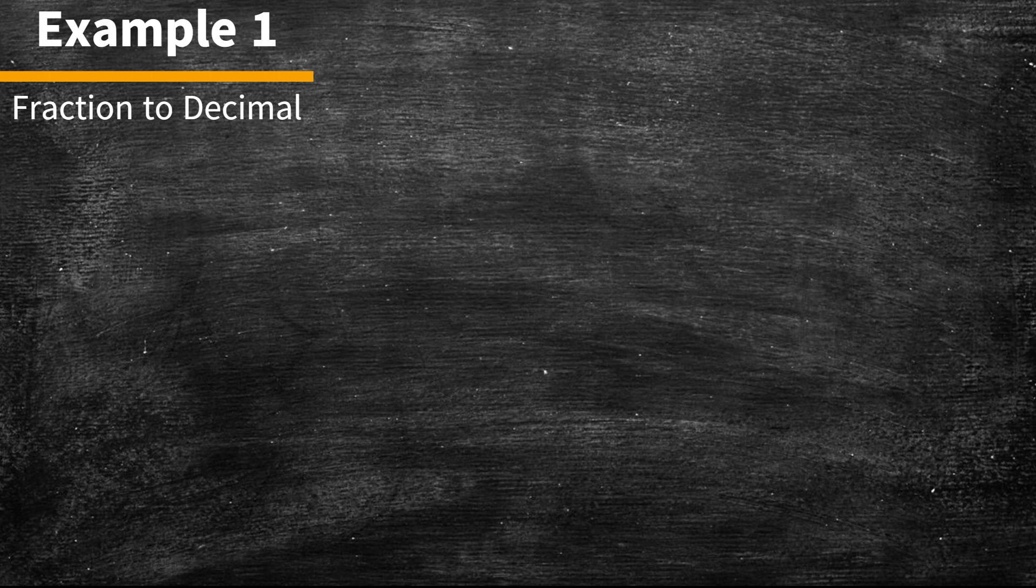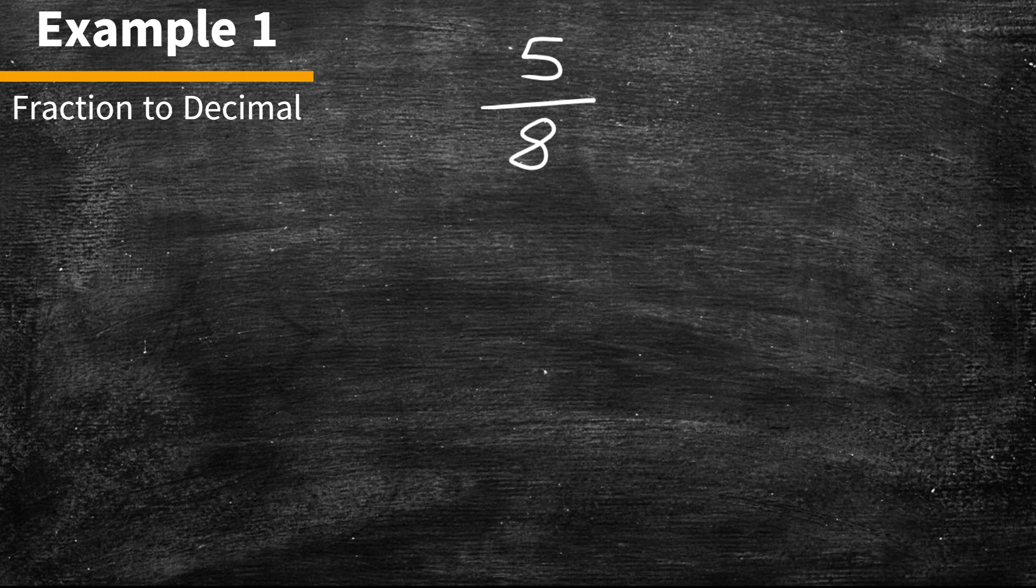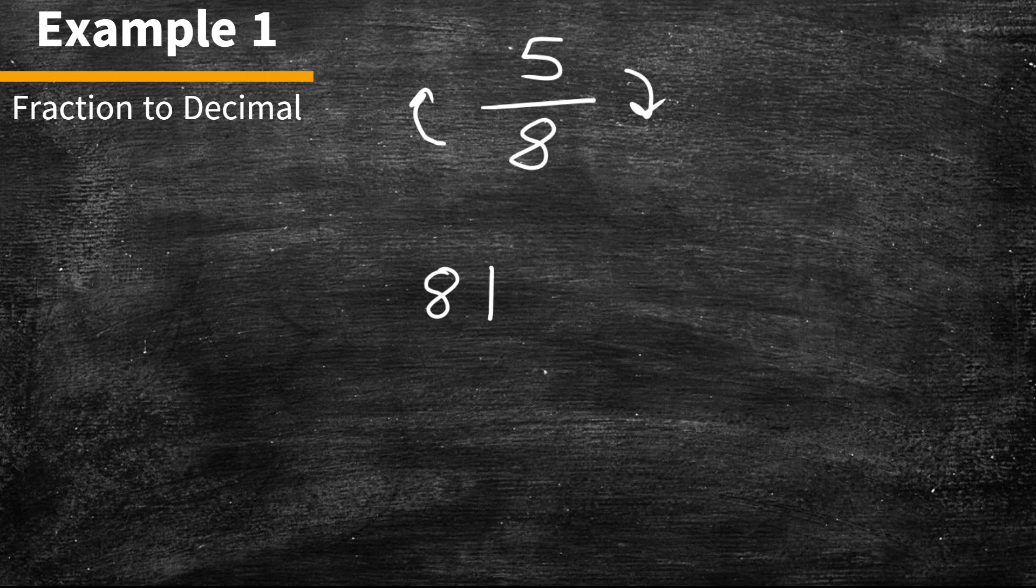Example number 1. We have 5 divided by 8, and we want to turn this into a decimal. So imagine turning this fraction over on its side. What we'll have is 8 on the outside and 5 on the inside. Now, all we do is divide.